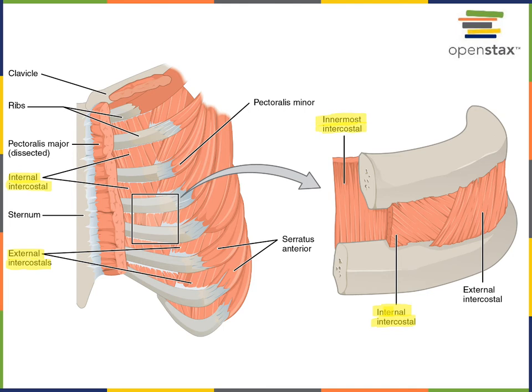The internal intercostal muscles, when they contract, cause the thoracic cavity to decrease in volume. They depress the ribs as they contract, decreasing the volume of the thoracic cavity and assisting with expiration. The external intercostal muscles, located superficially to the internal intercostal muscles, have the opposite action — they elevate the ribs, causing the volume of the thoracic cavity to increase, assisting with inspiration or drawing air into the lungs.